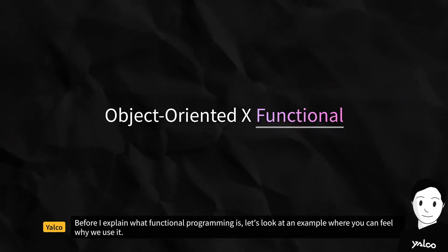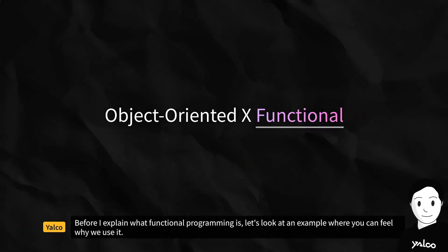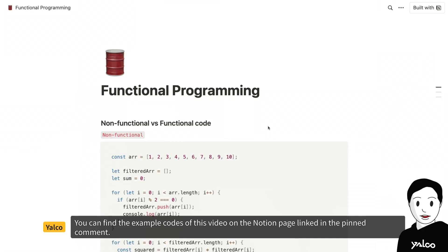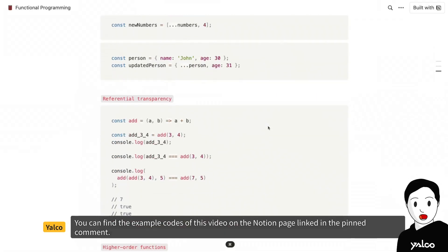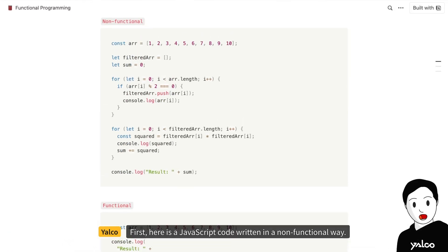Before I explain what functional programming is, let's look at an example where you can feel why we use it. You can find the example codes of this video on the Notion page linked in the pinned comment. First, here's a JavaScript code written in a non-functional way.